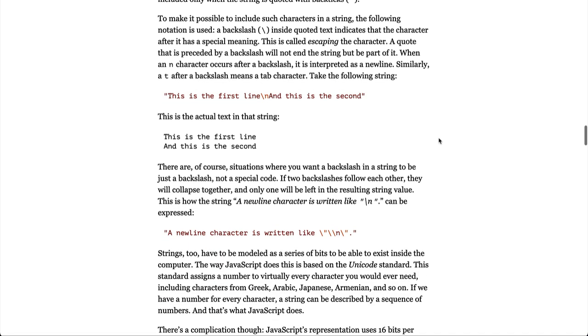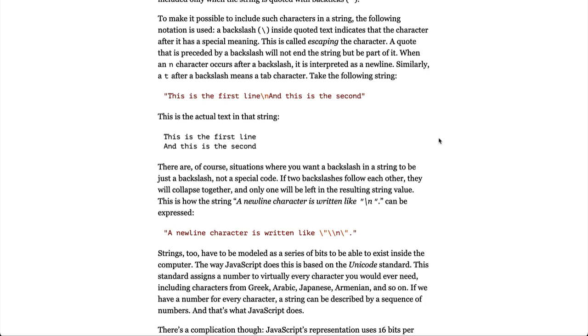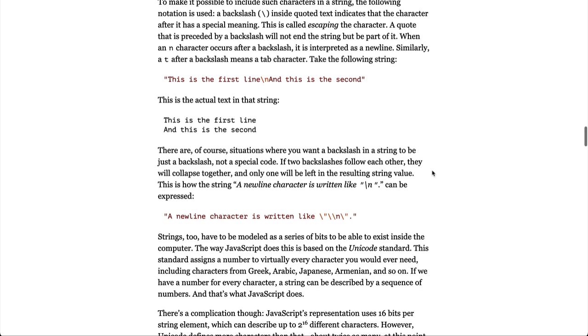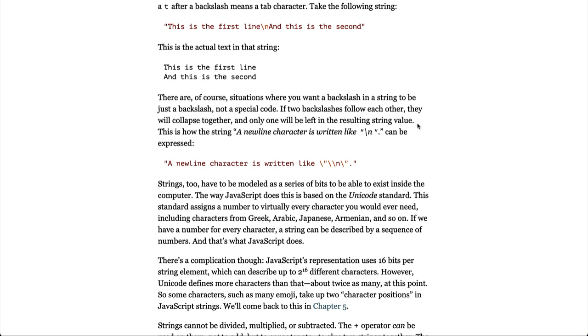To make it possible to include such characters in a string, the following notation is used. A backslash inside quoted text indicates that the character after it has special meaning. This is called escaping the character. A quote that is preceded by a backslash will not end the string but be part of it. When an n occurs after a backslash, it is interpreted as a new line. Similarly, a t after a backslash means a tab character. Take the following string. This is the actual text in the string. There are of course situations where you want a backslash in a string to be just a backslash, not a special code. If two backslashes follow each other, they will collapse together and only one will be left in the resulting string value. This is how the string a new line character is written like backslash n can be expressed.